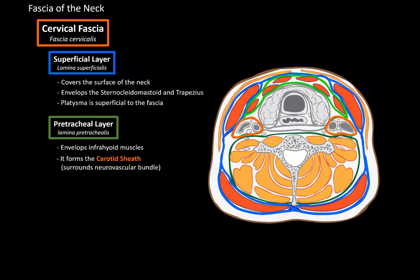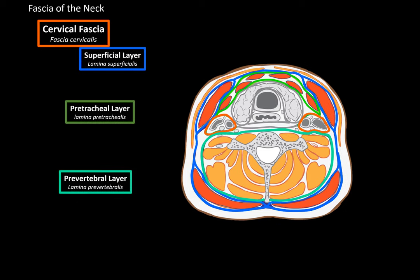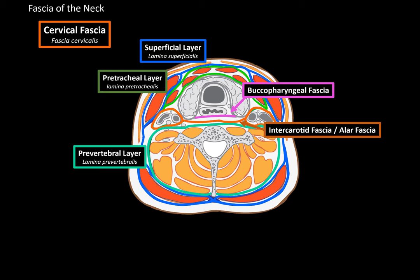Another layer of the cervical fascia is the prevertebral layer, which is the large layer covering the deep cervical muscles such as the longus colli and longus capitis. Those are the three layers of the cervical fascia. From this cross-sectional view, we can also see the buccopharyngeal fascia continuing down into the neck, fusing with the pterygomandibular raphe behind the pharynx. And between the carotid sheaths, there is a connecting fascia called the intercarotid fascia, also known as the alar fascia.